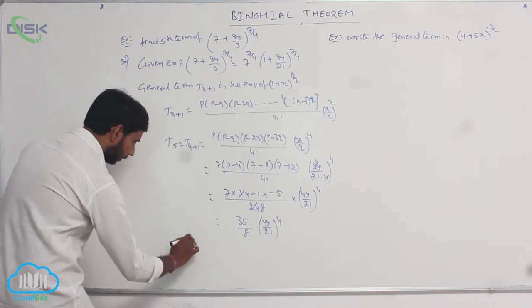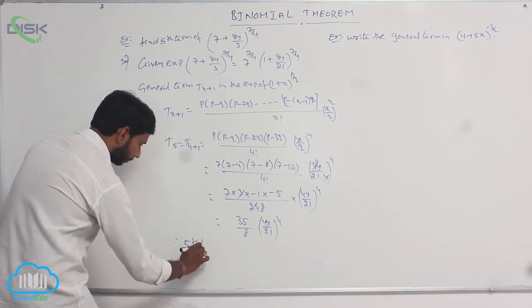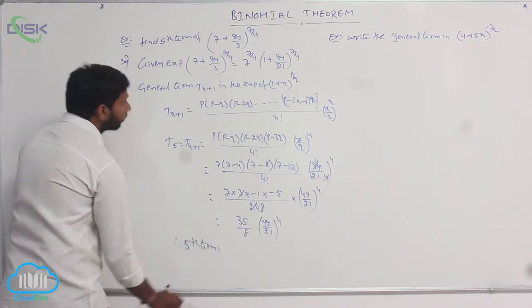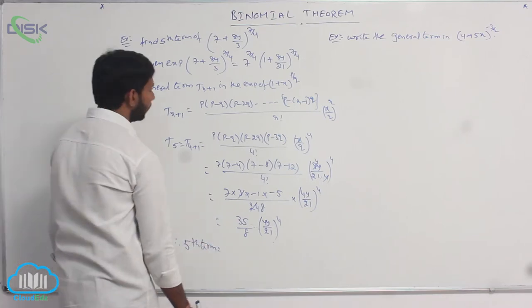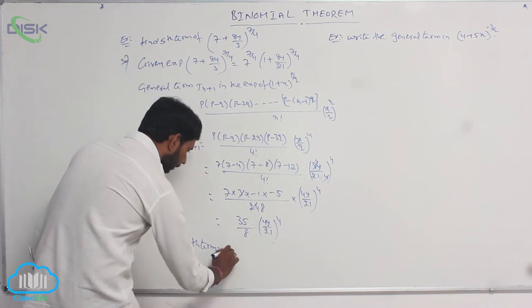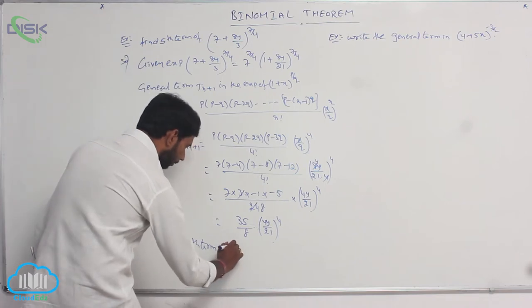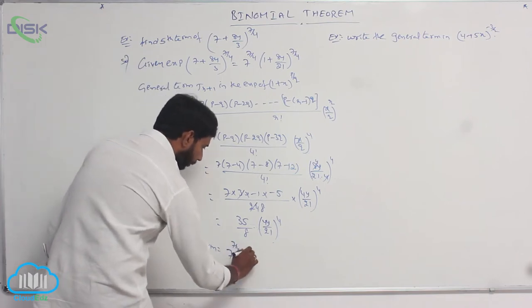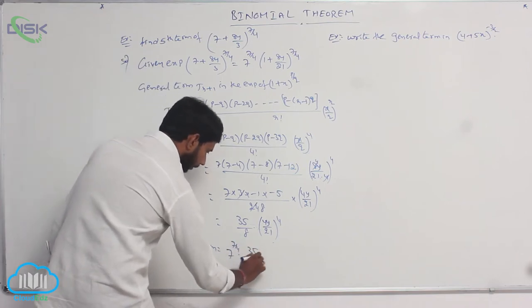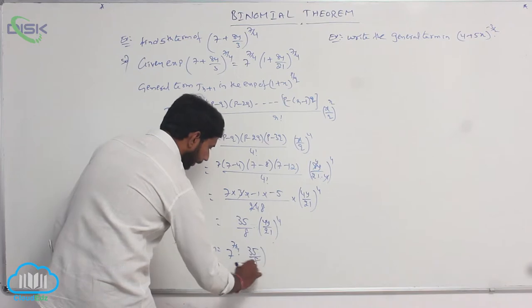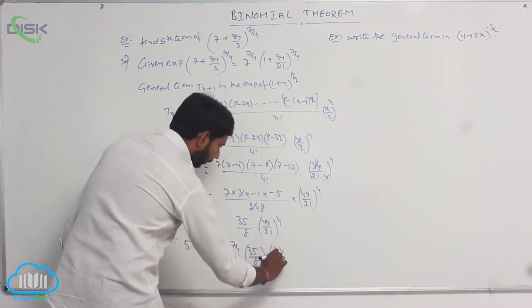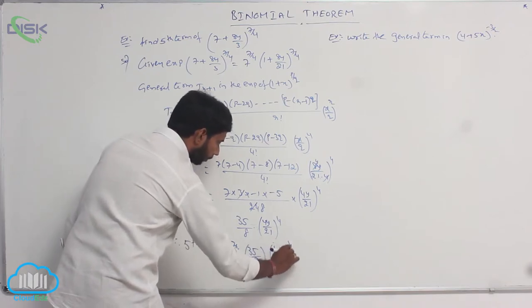Therefore, the 5th term is equal to 7 power 7/4 · (35/8) · (4y/21) whole power 4.